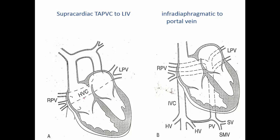In supracardiac TAPVC, the anomalous pulmonary veins join into a chamber right behind the heart — not inside it. From there it goes through the vertical vein into the innominate and into the superior vena cava and into the right heart. All the oxygenated blood coming back from the lungs returns to the right side. Life can only be sustained through a patent foramen ovale, creating an obligatory right-to-left shunt which is necessary to sustain life.